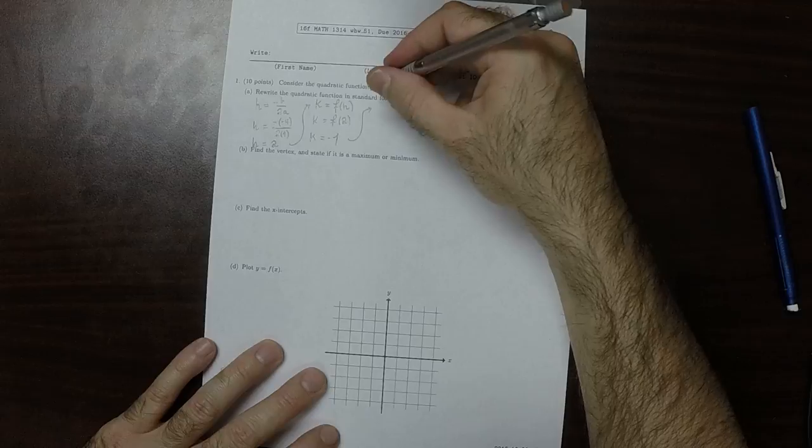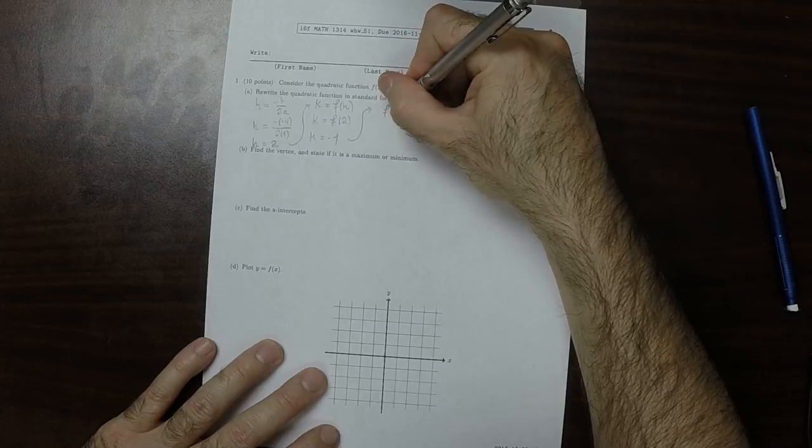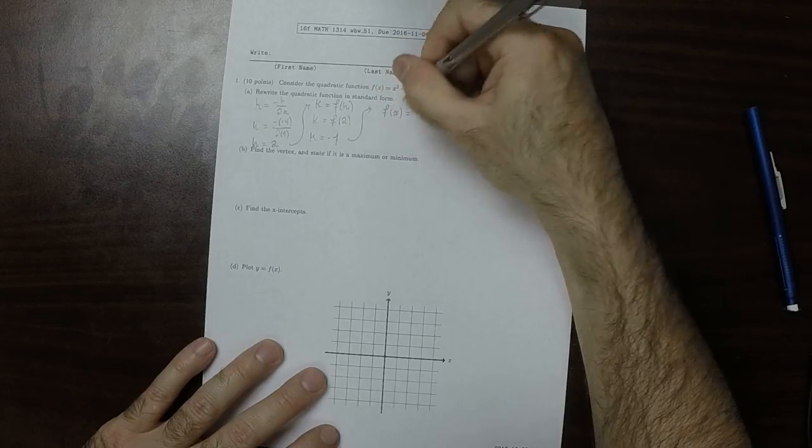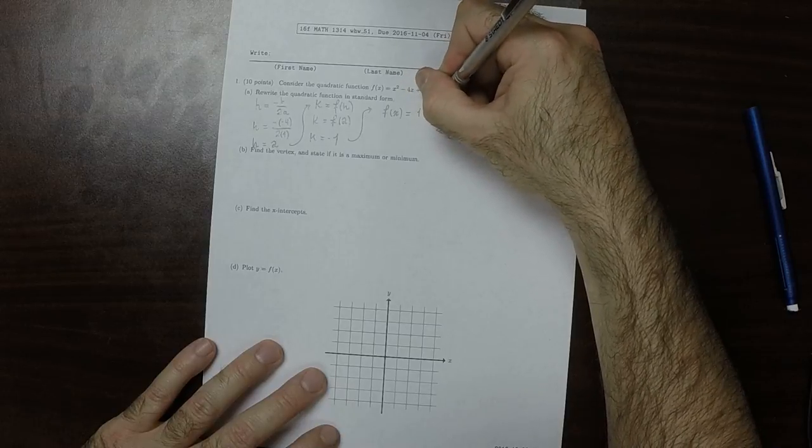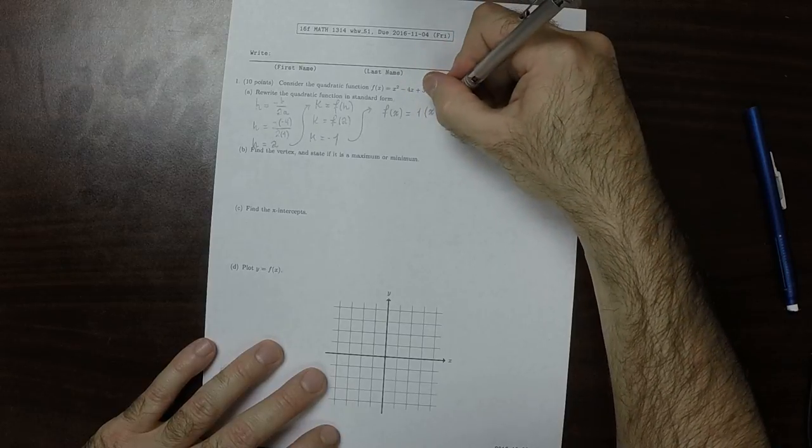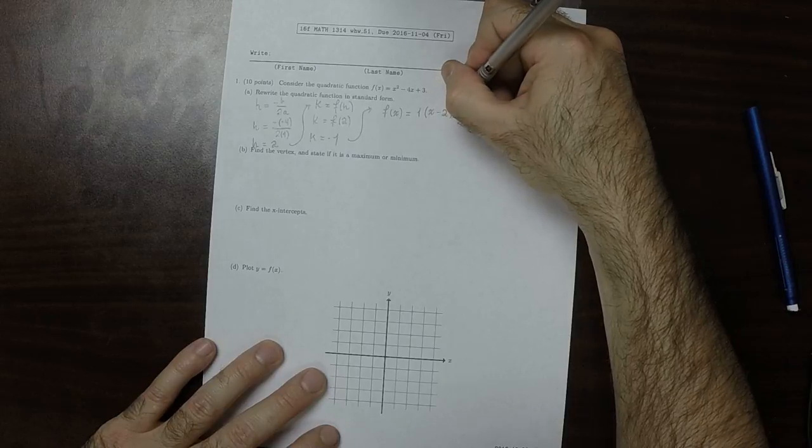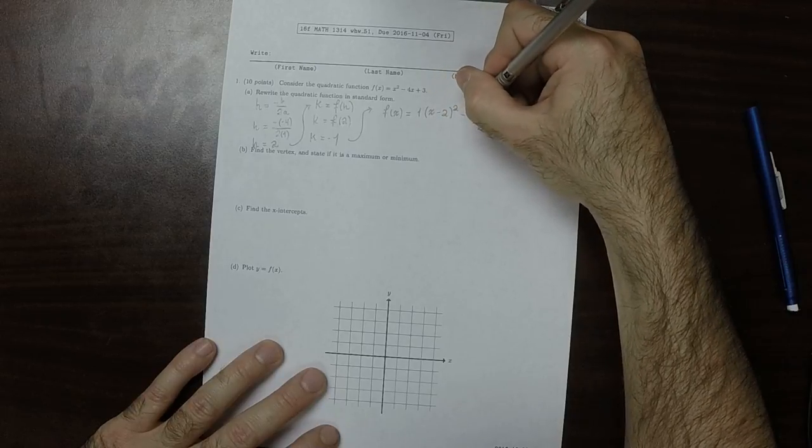On this particular exercise, that would be f of x equals 1 times x minus 2 squared and then minus 1.